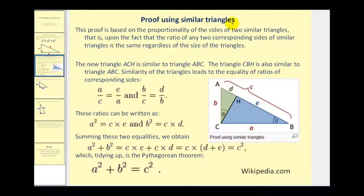I would like to spend a minute or two going over a proof for this theorem. Now there are several proofs for the Pythagorean Theorem. I like the one that uses similar triangles, and here's how it works. If you start with a larger right triangle ABC,